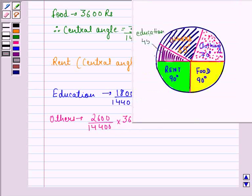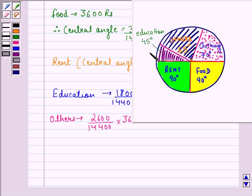So, the required pie chart will be this, wherein the central angle for food is 90 degrees, rent is 90 degrees, clothing is 70 degrees, others is 65 degrees, and education is 45 degrees. This is our solution to this question.